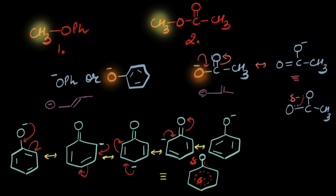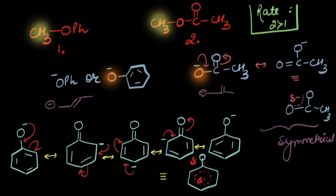Oxygen is more electronegative than carbon. Even though the first case has more resonating structures, the second case has a symmetrical resonance where the negative charge moves from oxygen to another oxygen atom. Oxygen, being more electronegative than carbon, can hold this negative charge in a much more stable way. Therefore, the second leaving group is more stable than the first one, and the second substrate would react faster than the first.